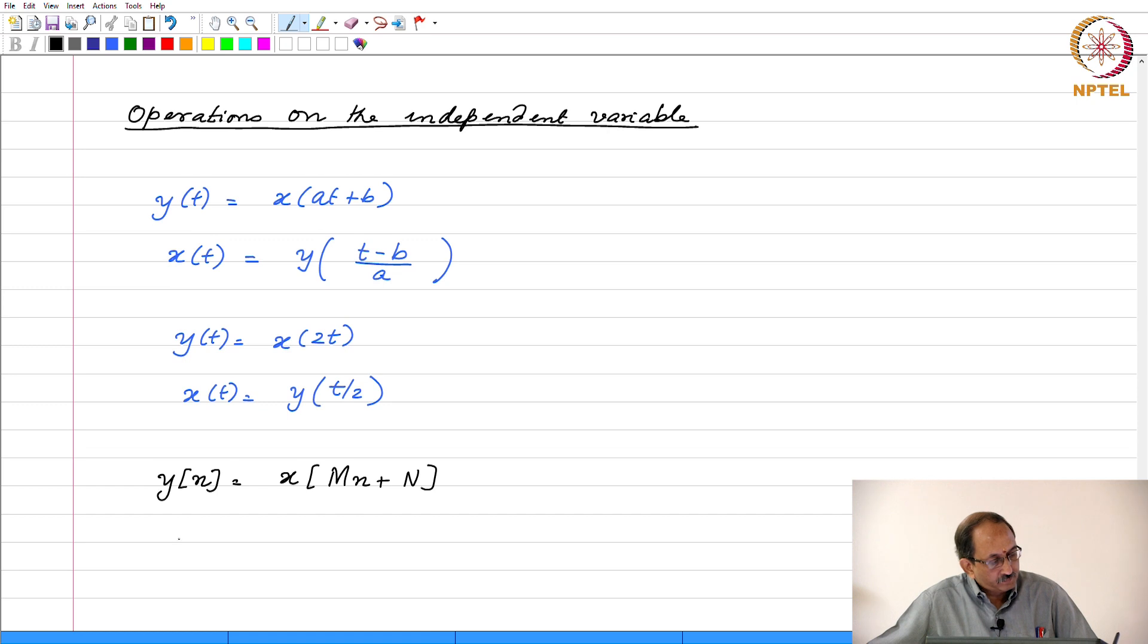Working on a similar analogy, if y(n) is x(2n), that seems like the counterpart of y(t) equal to x(2t). So in this context, suppose I have something like this.